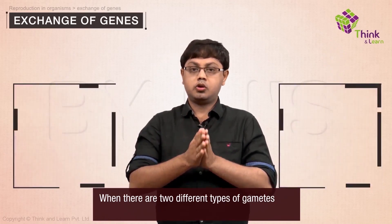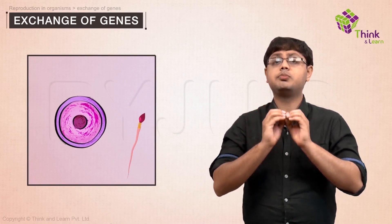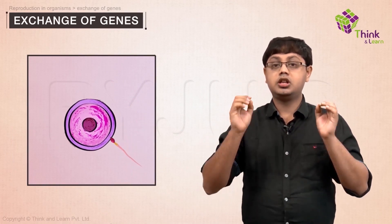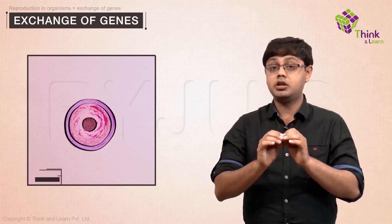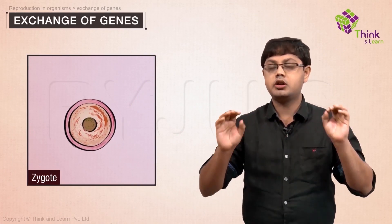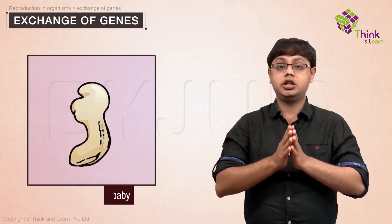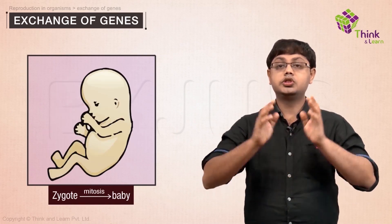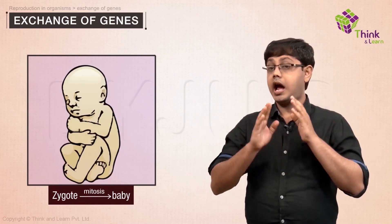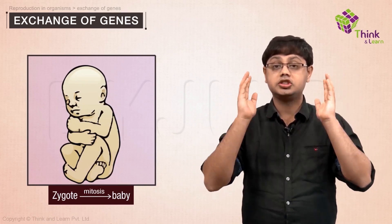So when we say sexual reproduction, it is just making the egg and the sperm fuse. The genetic exchange will happen. The first cell, or the zygote, is formed. Finally, the zygote divides mitotically to produce a baby. Simple, isn't it? Actually, this is where all the complication starts!